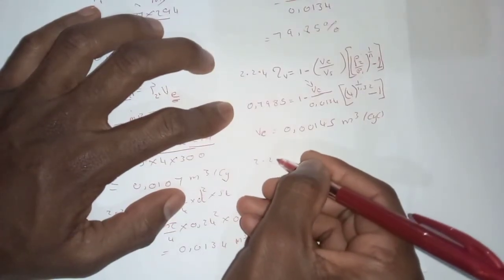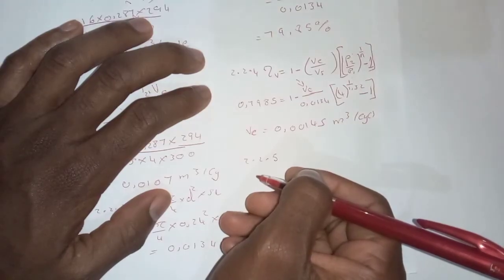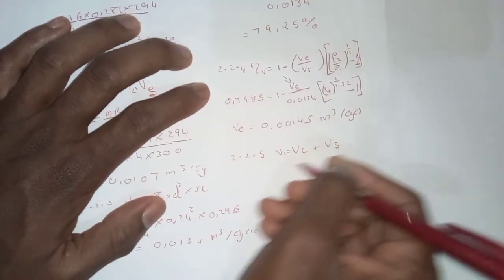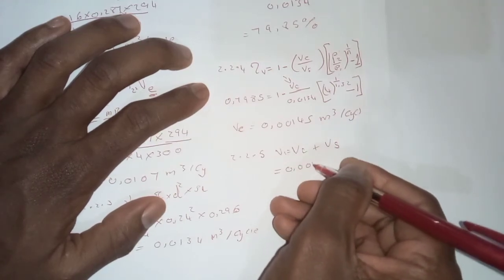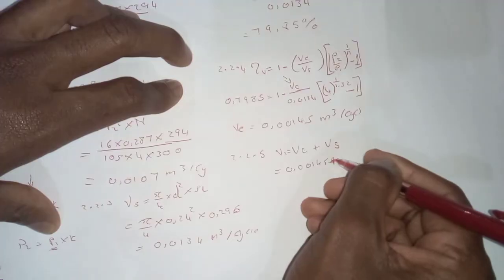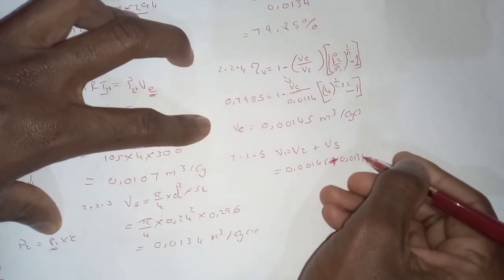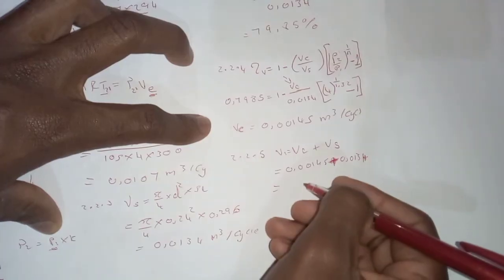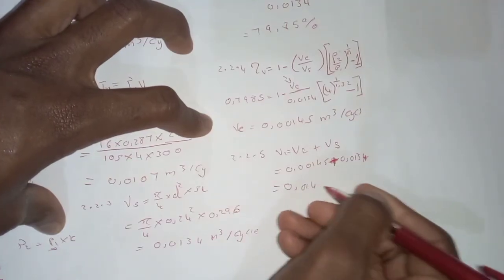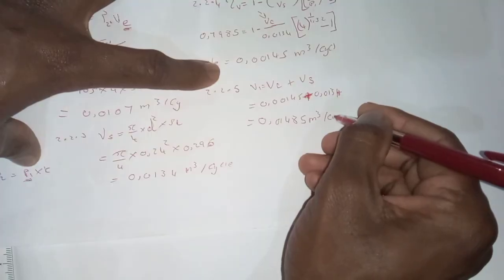For 2.2.5 — the cylinder volume in cubic meters per cycle correct to 5 decimal places — the cylinder volume V1 equals the clearance volume plus the swept volume. That is 0.00145 plus 0.0134, giving a cylinder volume of 0.01485 cubic meters per cycle.